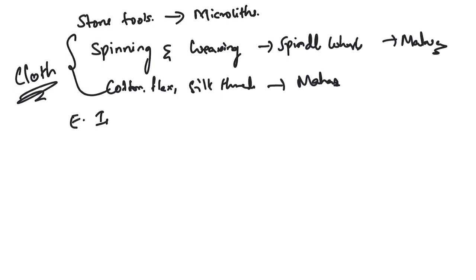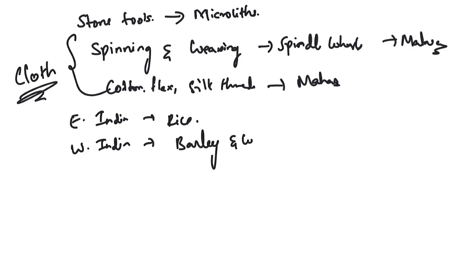Eastern India produced rice, while western India cultivated barley and wheat. Chronologically, certain settlements in Malwa and central India — like Eran and Kayatha — are said to be the earliest, whereas settlements in western Maharashtra and eastern India came much later when compared to Kayatha and Eran.